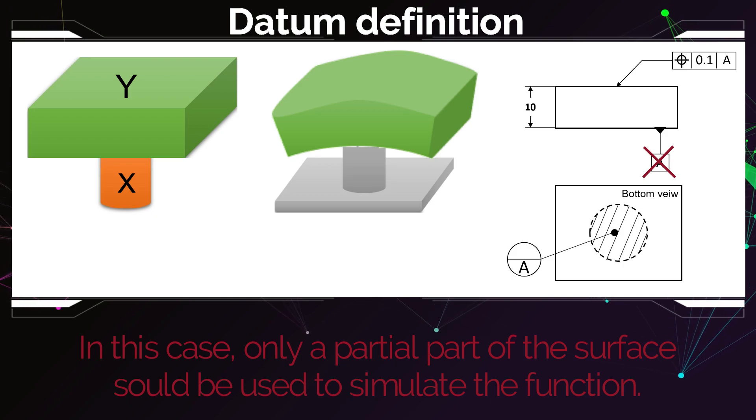You can also change the shape of this partial surface. You can also make a rectangle out of the circle or whatever you need it to be, just dependent on the shape of the counterpart.